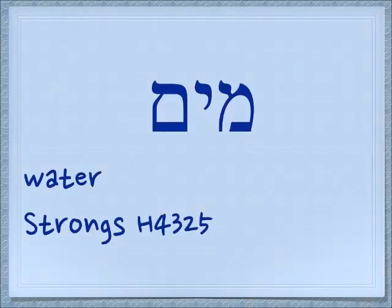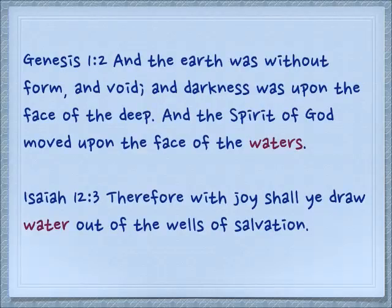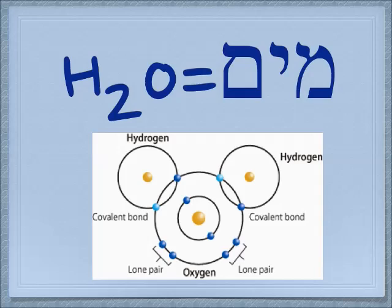Here's an interesting word with both the regular Mem and the final Mem — mayim — and it means water. It's always in the dual, not just the plural but in the dual. Genesis 1:2 — and the earth was without form and void and darkness was upon the face of the deep, and the spirit of God moved upon the face of the waters. Isaiah 12:3 — therefore with joy shall you draw water out of the wells of salvation. Interestingly, the chemical formula for water is H2O — two hydrogen molecules and one oxygen — and here we have two Mems and one Yod.